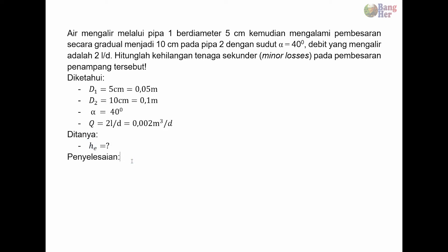Langkah pertama dalam menyelesaikan soal ini adalah mencari kecepatan aliran pada pipa 1 dan pipa 2. Untuk mencari kecepatan, kita bisa menggunakan persamaan debit, yaitu Q sama dengan A kali V. Oleh sebab kita mencari kecepatan atau V, maka V kita tempatkan sebelah kiri, persamaannya menjadi Q per A.